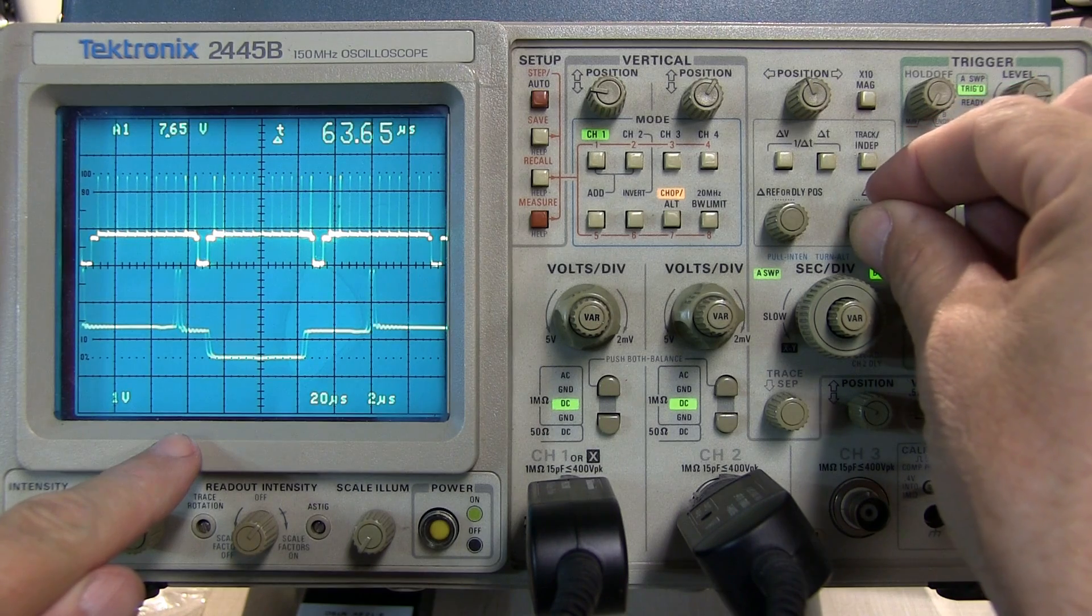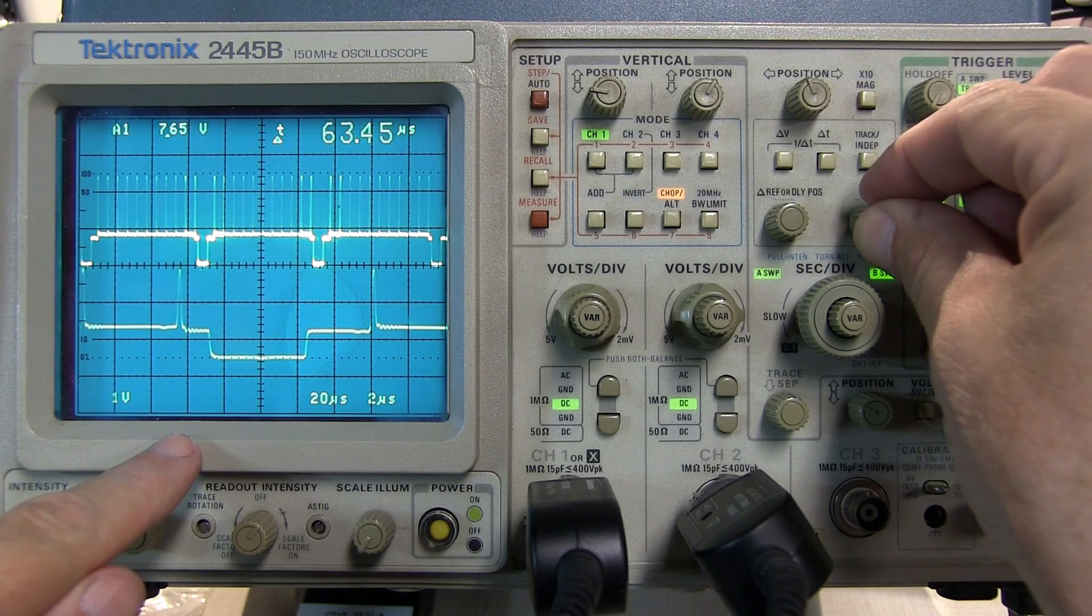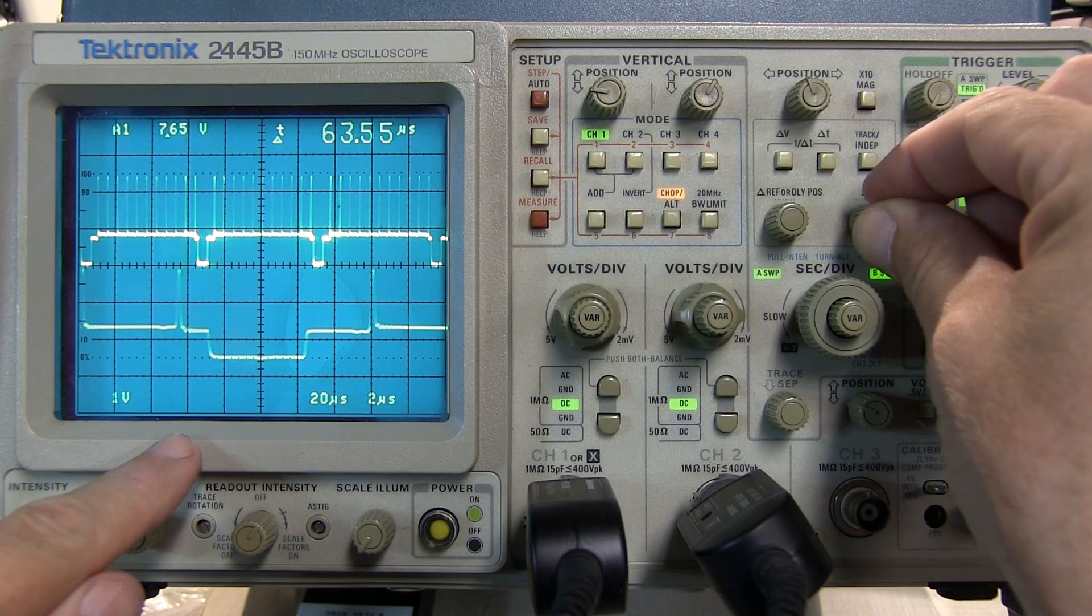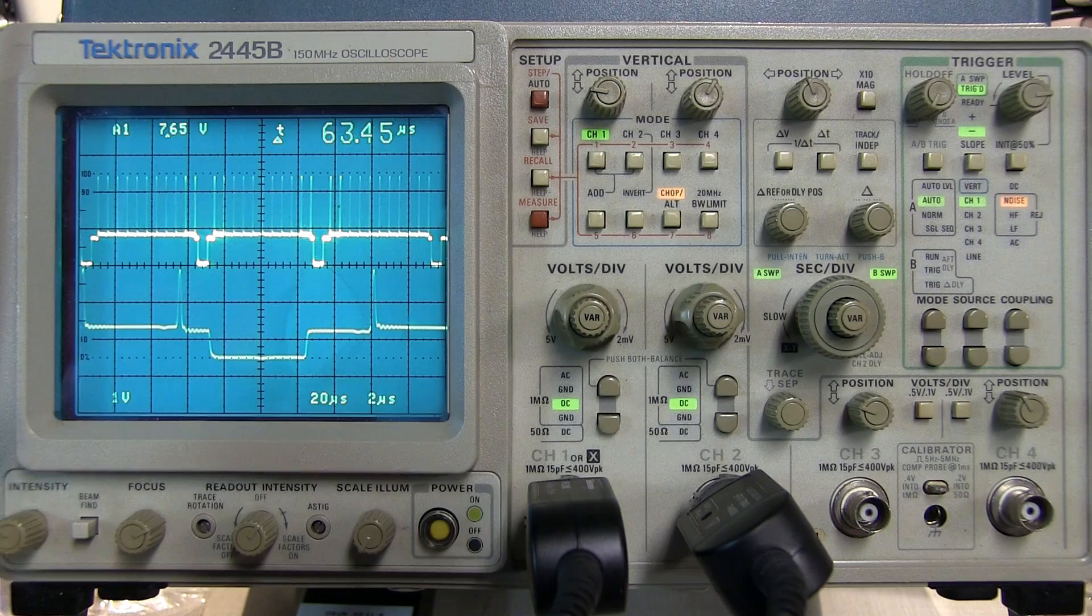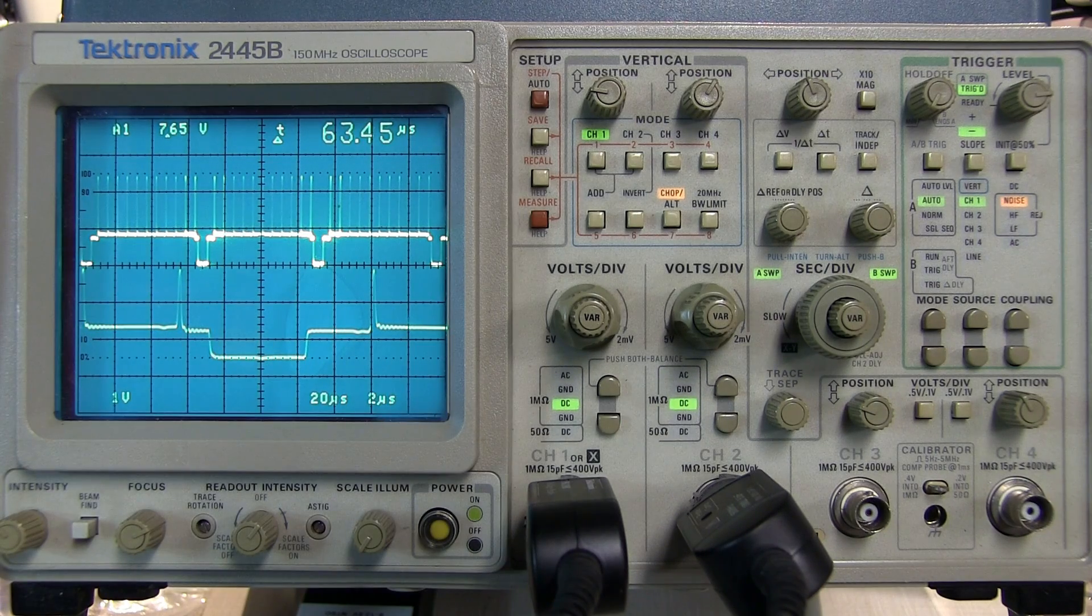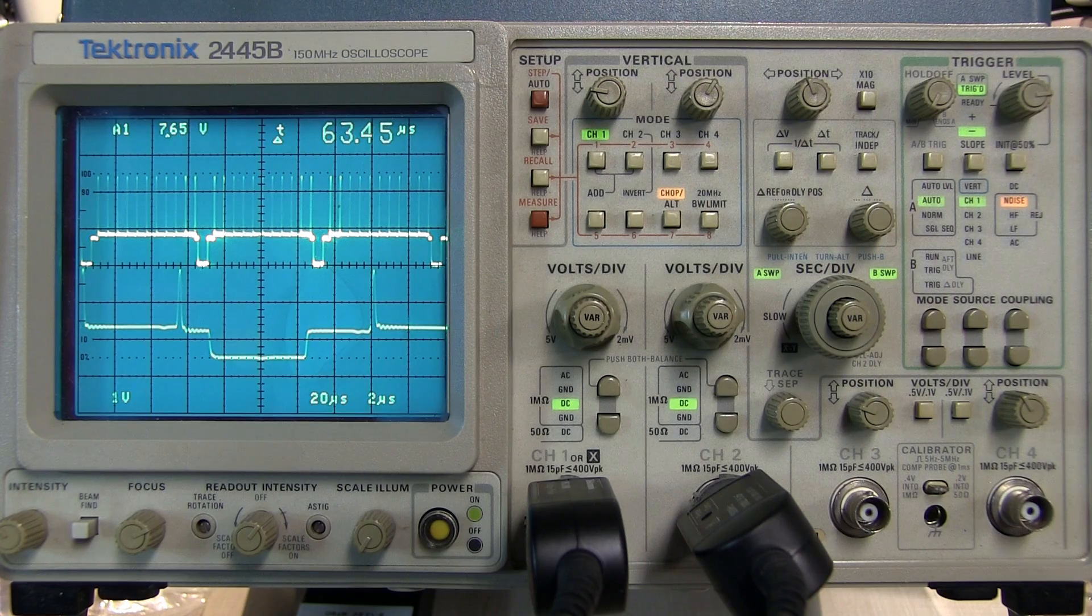If I line these up exactly we can actually see that it should be right around 63.5 microseconds which is the repetition rate of the horizontal lines in an analog TV at least here in the US.